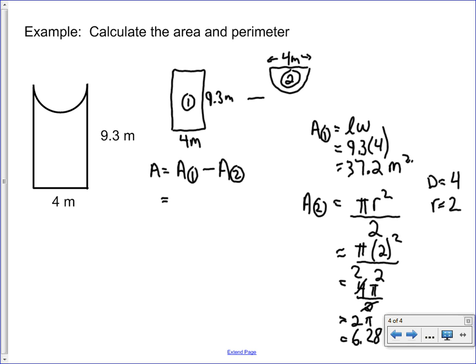So now what we do is we substitute: the area for the rectangle, which is 37.2, minus 6.28. And we get that the area is equal to 30.92 meters squared. Therefore, the area is 30.92 square meters.